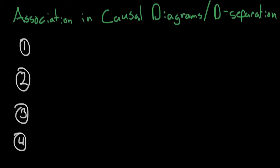Association in causal diagrams. We're going to be discussing how I can tell whether two variables are associated in causal diagrams. Technically, the technique we're using is called d-separation, if you ever want to look it up.